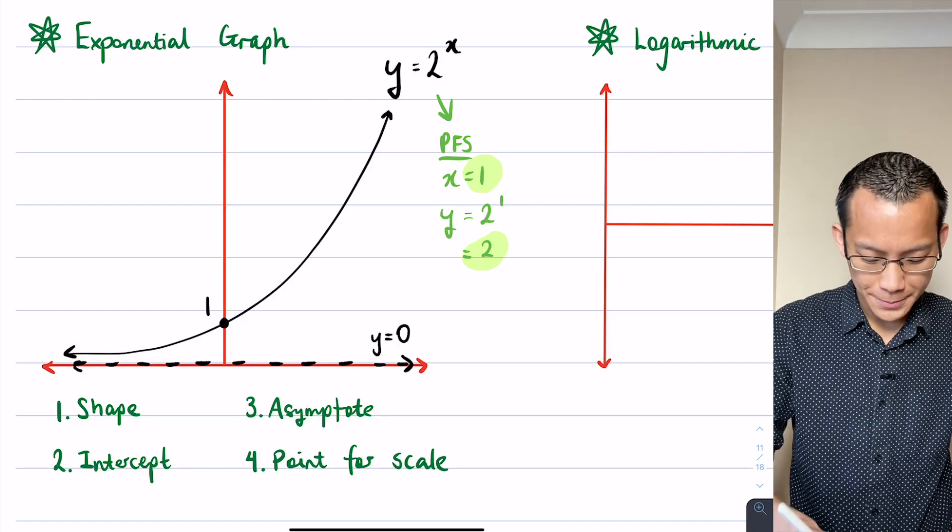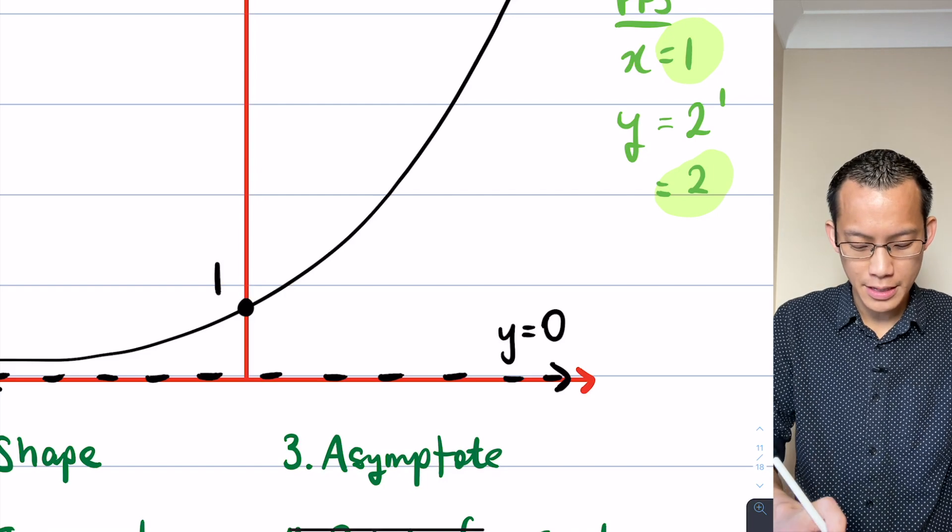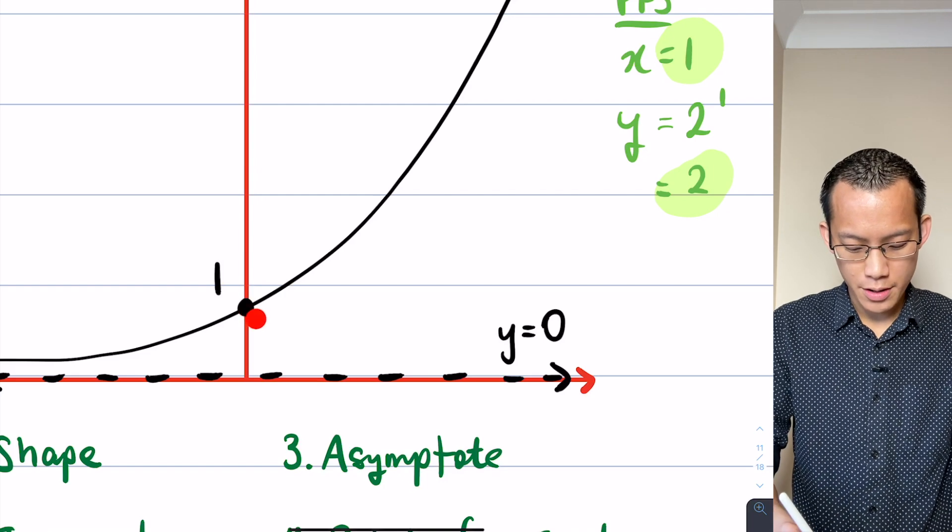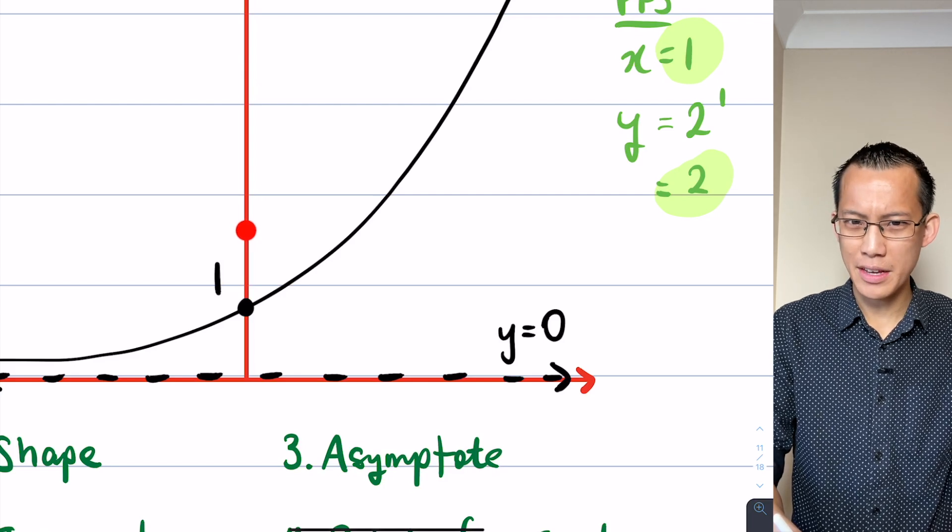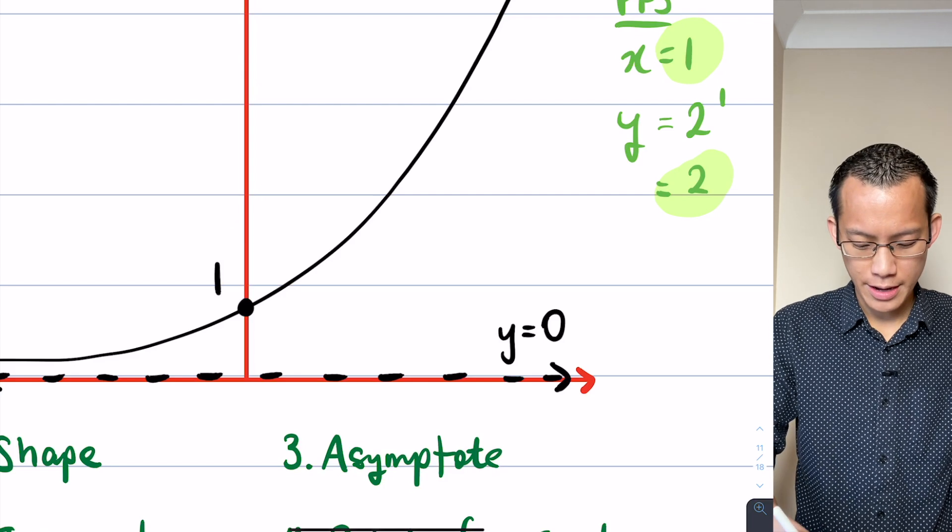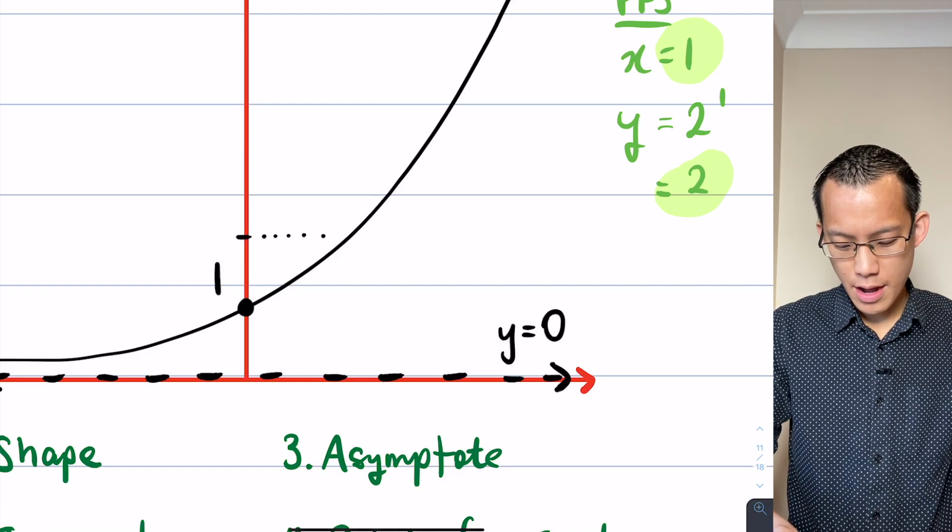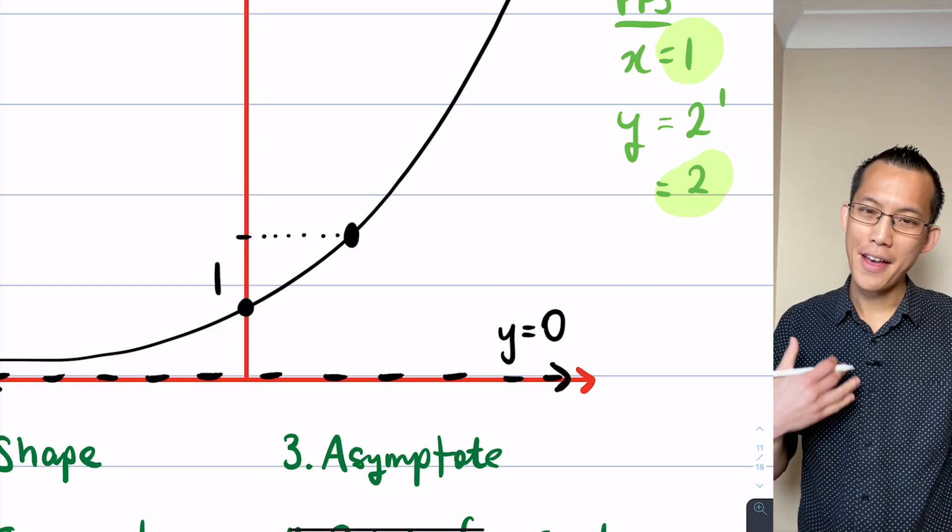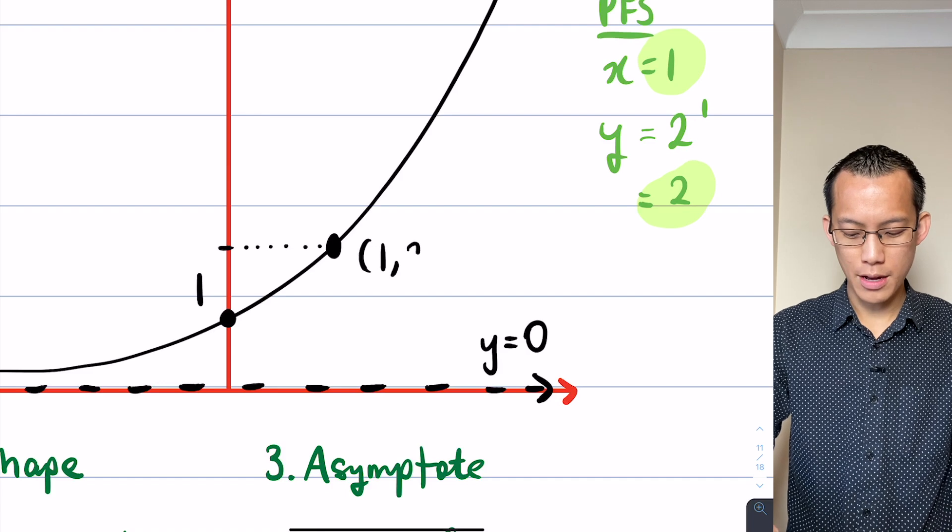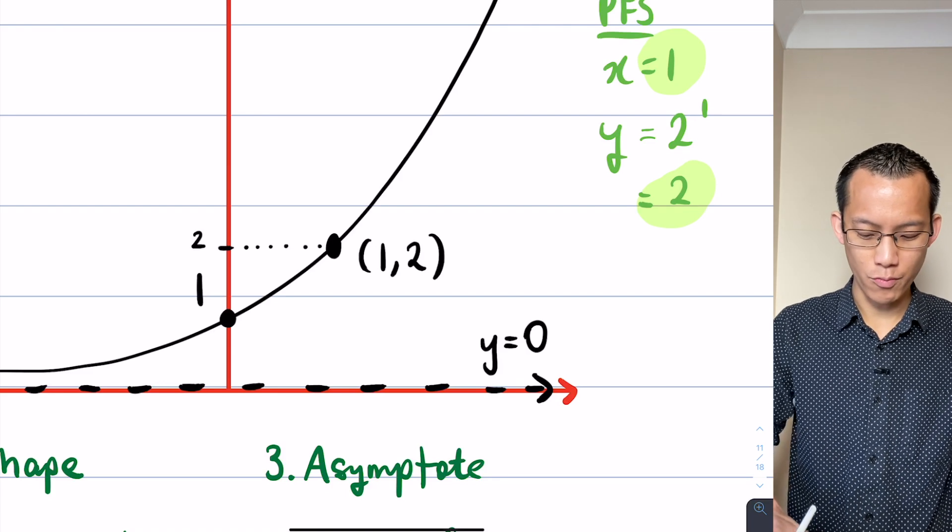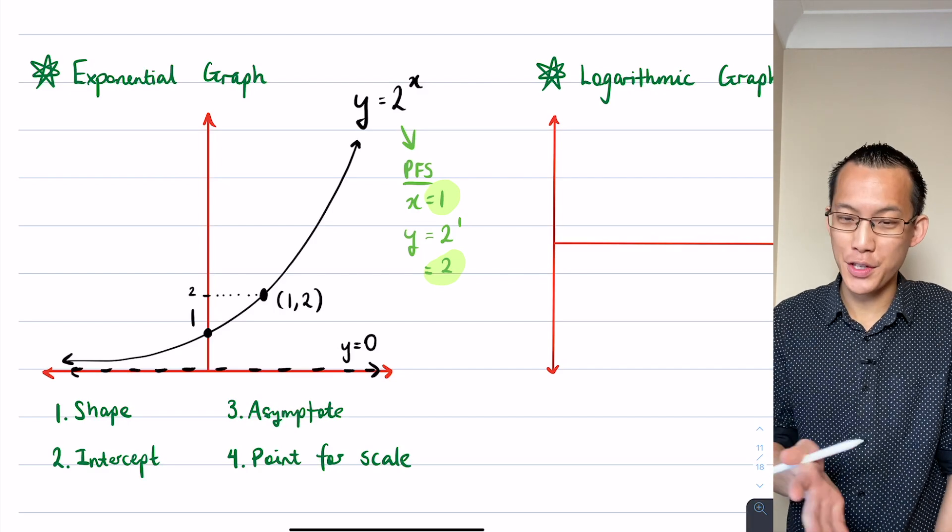I'm going to position it carefully. If I've got my 1 here then 2 looks like it's going to be about there - that's twice as high, right? Therefore let's mark that in. When I go across to the right and see where I collide with the graph, this is going to be my point for scale: 1 comma 2. And you're done.